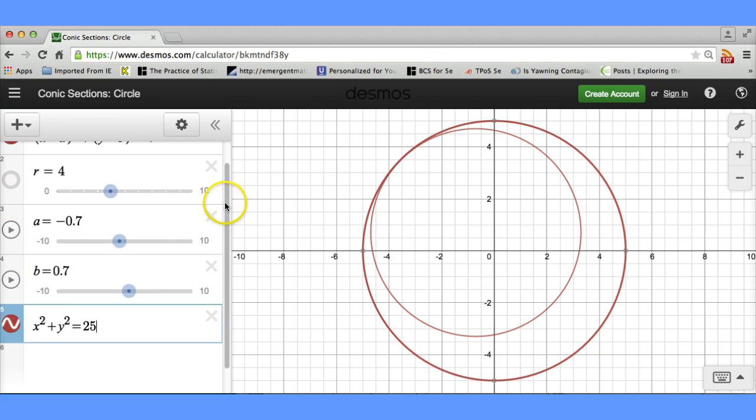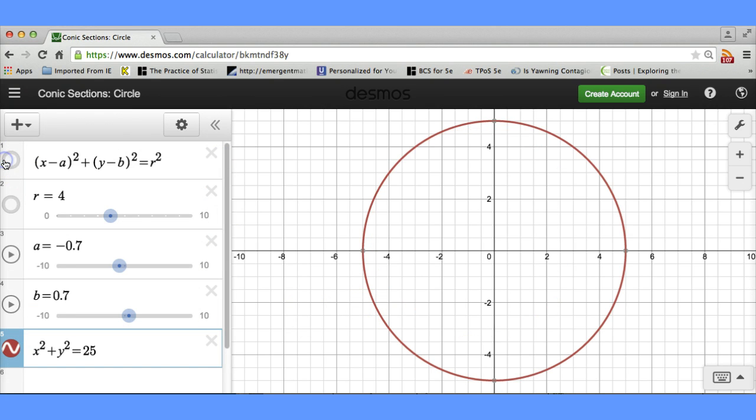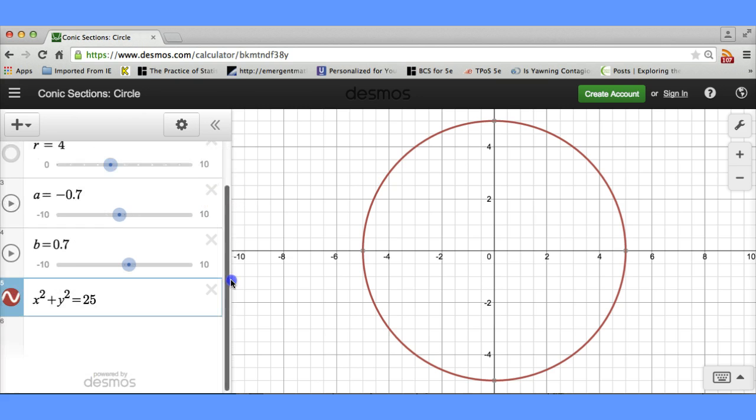So let me hide our previous circle here. So this circle I entered, it's centered at the origin. And it does appear to have a radius of 5.